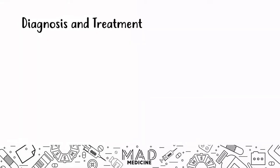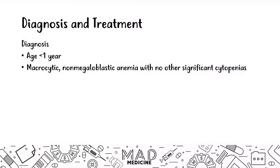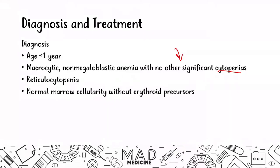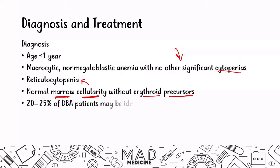When it comes to diagnosis, most of these patients present at infant age — less than one year old. You'll see non-megaloblastic macrocytic anemia with no other significant cytopenias and no other significant blood findings. You will see reticulocytopenia — reticulocytes will not be present — because you're not going to have erythroid precursors. You're going to see normal marrow cellularity without erythroid precursors, and that is why you see reticulocytopenia.